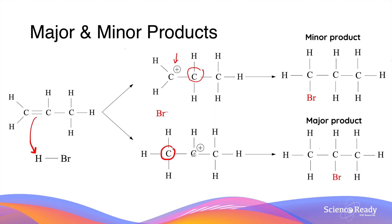Consequently, this affects the structure of the final product, because the halogen will be added to the positively charged carbon atom. In the first case, the reaction produces 1-bromopropane where the bromine atom is added to the first carbon atom. In the second case, the product is 2-bromopropane where the bromine atom is added to the second carbon atom of the molecule. While this reaction produces both molecules as a product, 2-bromopropane is always produced in a greater quantity compared to 1-bromopropane.